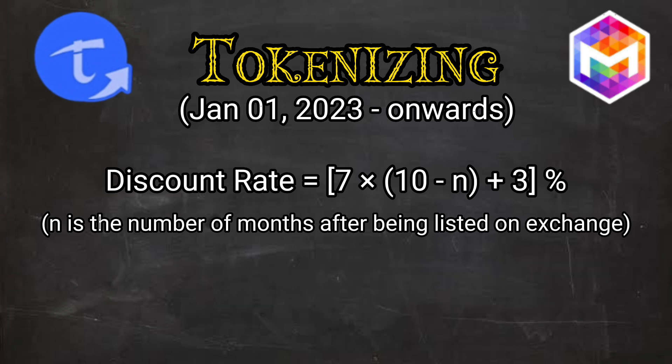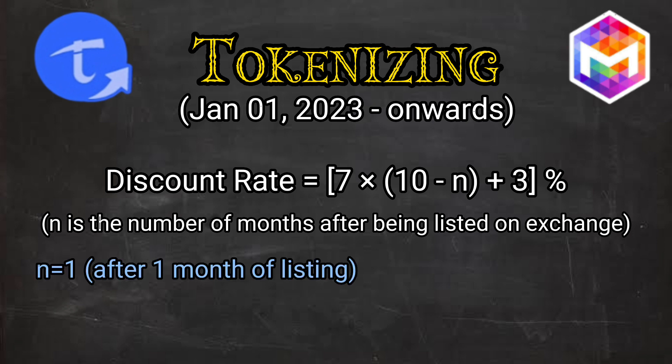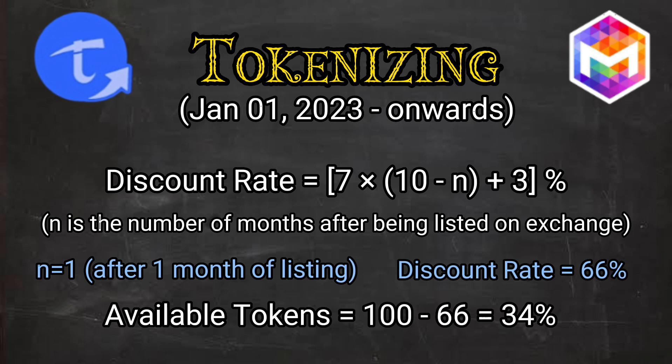Let's assume that on May 1st, 2023, fee coin is listed on an exchange. In that case, the value of N becomes 1 on June 1st. Putting N equals 1 into the formula, the discount rate becomes 66%, meaning you will be able to tokenize 34% of your coins.